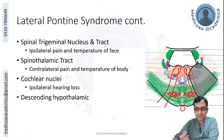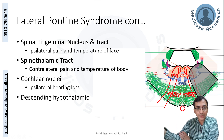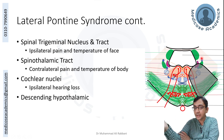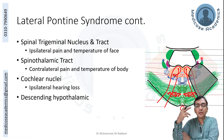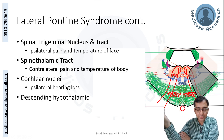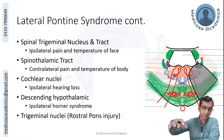Descending hypothalamic sympathetic fibers travel down from the hypothalamus alongside the spinothalamic tract, supplying presynaptic sympathetic neurons. When affected, sympathetic output is lost — they do not cross the midline — resulting in ipsilateral Horner syndrome: ptosis (drooping eyelid), miosis (pinpoint/constricted pupil), and anhidrosis (absence of sweating on that side of the face).